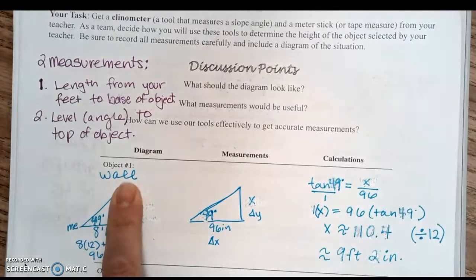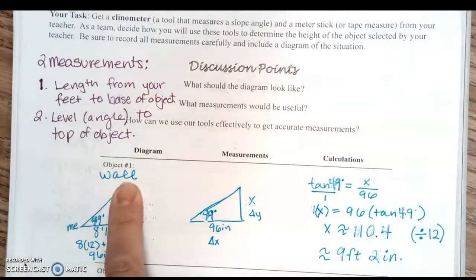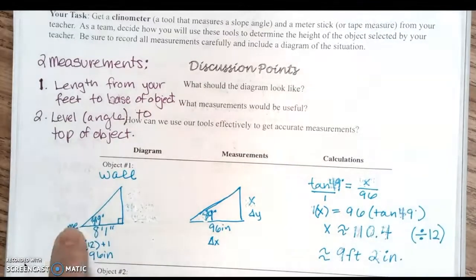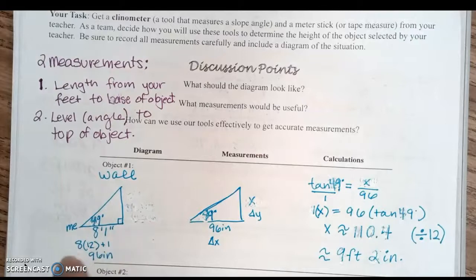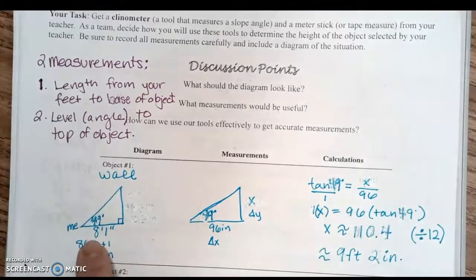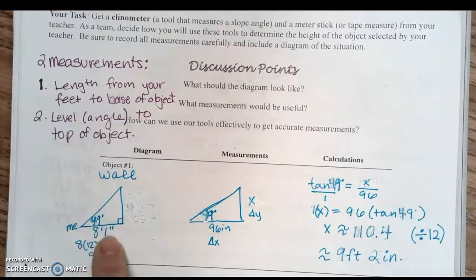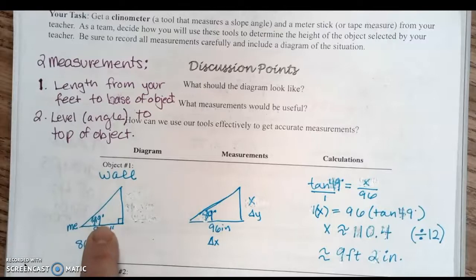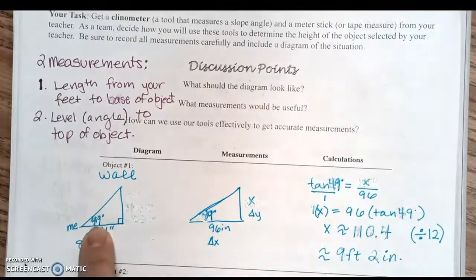I took the measurement from me to the wall—from my feet to the bottom of the wall—as 8 feet 1 inch, and then I measured the angle from me to the top of the wall as 49 degrees.